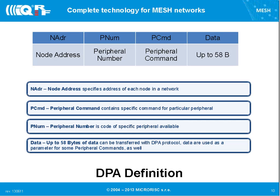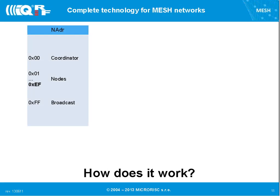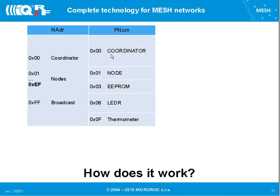You can also send data — 58 bytes in DPA (standard IQRF has 64 bytes; these 6 bytes are used for the protocol). In practice: node address has coordinator as zero and nodes from 01 to EF. Currently DPA supports 240 nodes but is ready for 2-byte addressing, so in future it will support 65,000 nodes. Broadcast is address FF. Peripherals have example numbers: coordinator has peripheral 00, 01, EEPROM is 03, and so on.